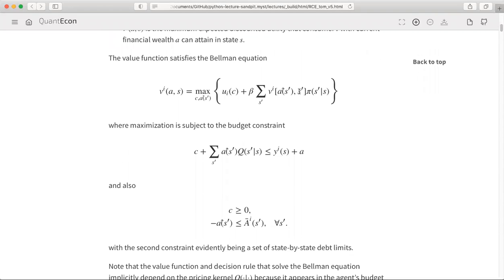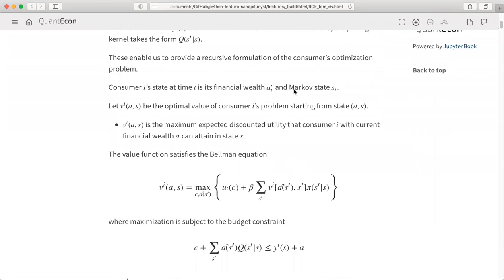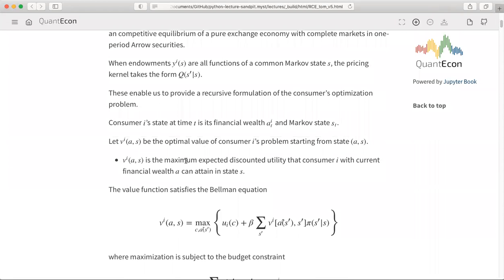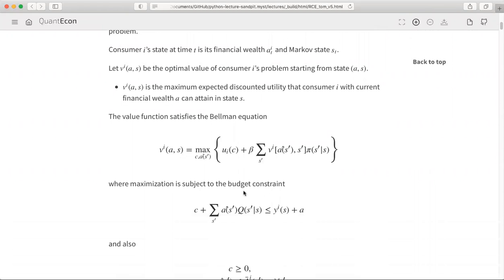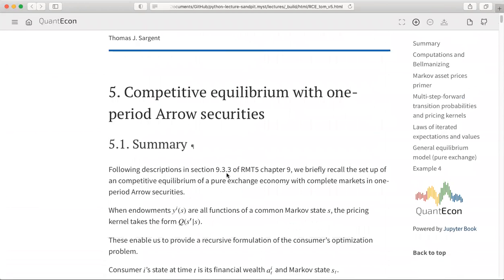We have this value function. A key thing here is the value function for a consumer with financial wealth A and Markov state S. It's indexed by the name of the consumer, i. I'm taking this literally from Ljungqvist-Sargent chapter 9, section 9.3.3.